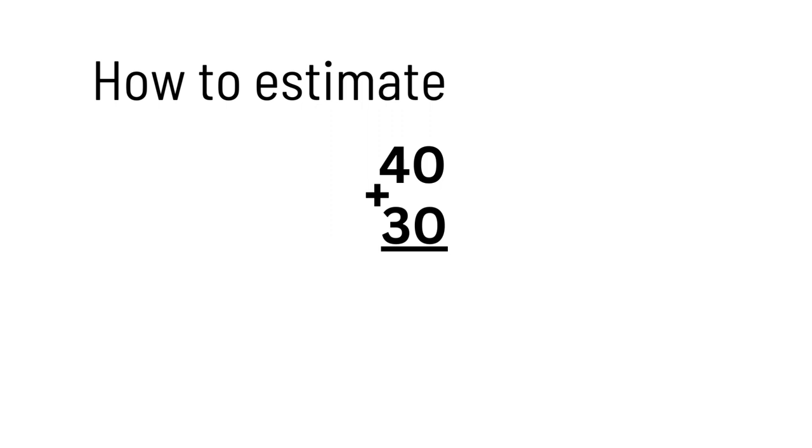Then it's 25. 25 would round up to 30. Now, if we add the estimates, the answer would be 70. That means our exact answer will be near 70. But if we really add, we would get 69. 69 and 70 are just one number apart. This is why estimation is very important.